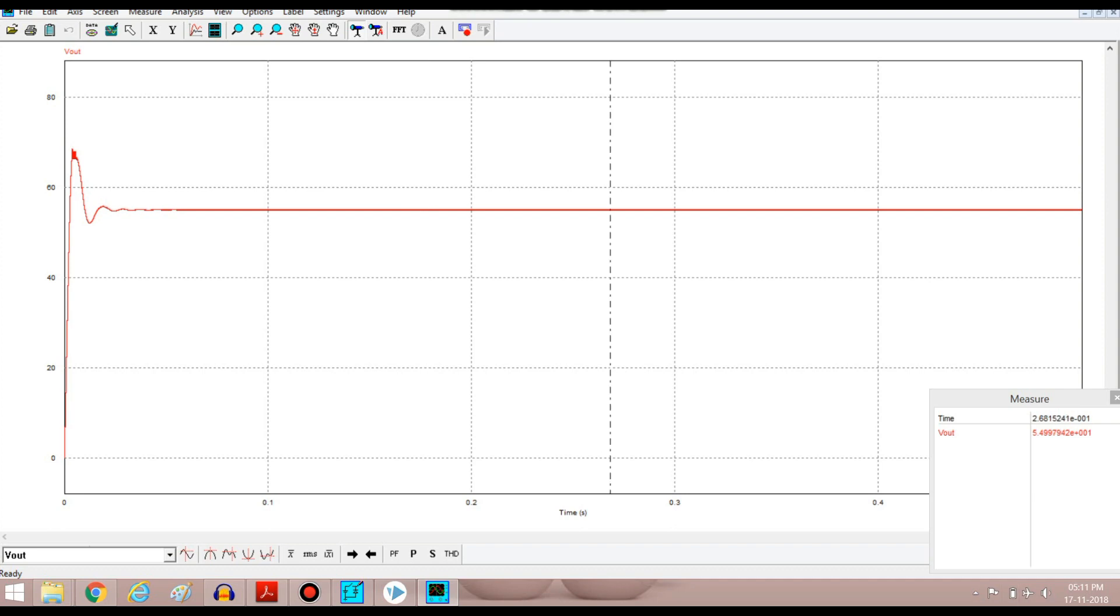Here we can see the output is 55 volts, that is according to our desired output. So this was all about flyback converter design.